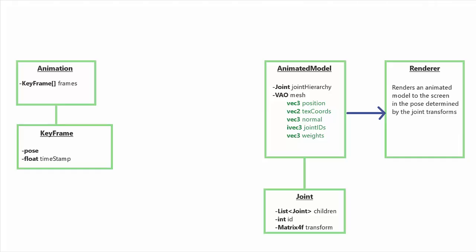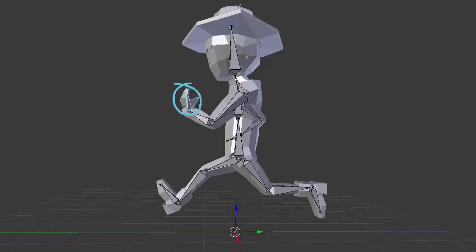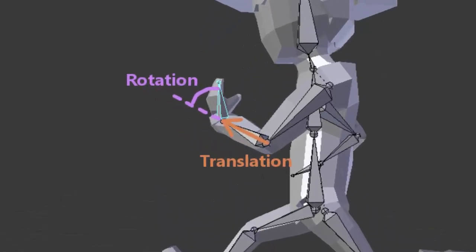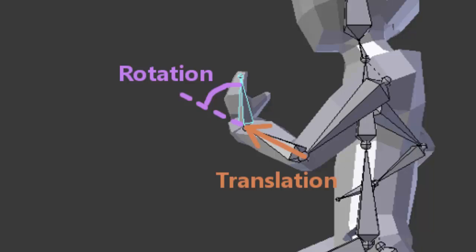A pose can just be represented by a transform — a position and rotation — for every joint in the skeleton, so if a model has 10 joints then a keyframe is obviously going to have 10 joint transforms, one for each joint. One important thing to note though is that these transforms are in relation to the parent joint rather than the model's origin. This makes it easier to interpolate between poses, as we will see in an upcoming tutorial.